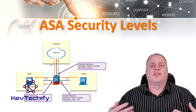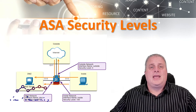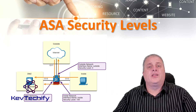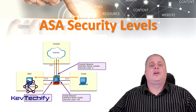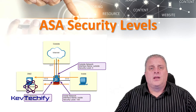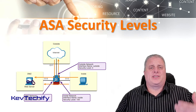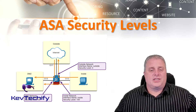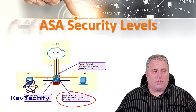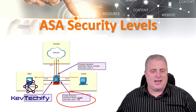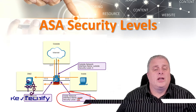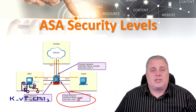Security levels define the level of trustworthiness of an interface. Each operational interface must have a name and a security level from 0, being the lowest, to 100, being the highest, and you have to assign that to each interface. Level 100 should be assigned to the most secure network, such as our inside network. We give the inside interface a name of 'inside' and assign it the highest possible level of 100, because it should be the most trusted.